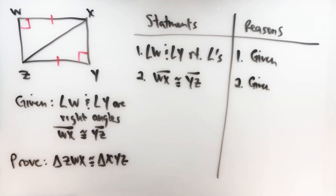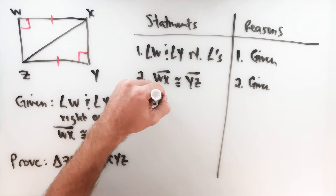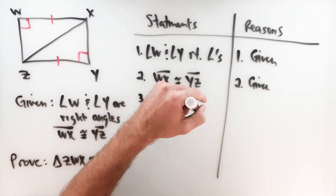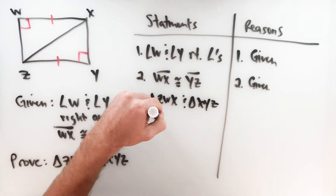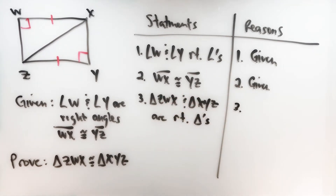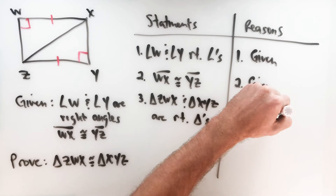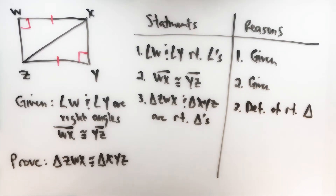Thinking back to our three-part criterion: we need to state that these triangles are right triangles. Are they right triangles? Yes — they've got right angles, and that is the definition of a right triangle. We still have to state it. So our next statement is: triangle ZWX and triangle XYZ are right triangles. The reason: they have right angles — that's the definition of a right triangle.